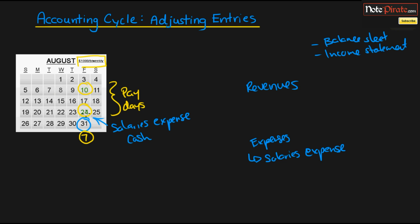The entry on the 24th — debit salaries expense, credit cash — is the last salaries entry because that is the last time we pay them in August. For the rest of August we are not paying them in cash. So for that final week, we're not recording any expense, which means salaries expense will be understated. That is not a good thing — our income statement won't accurately reflect all the expenses incurred in August.